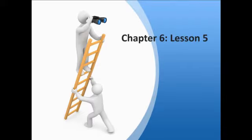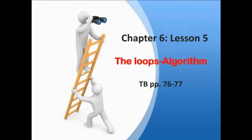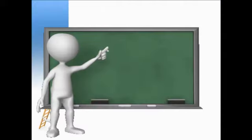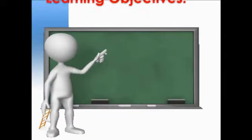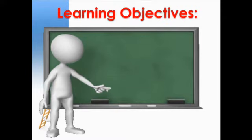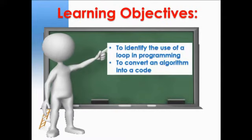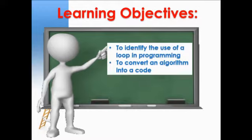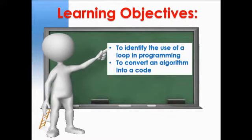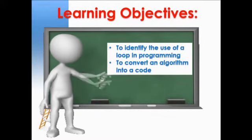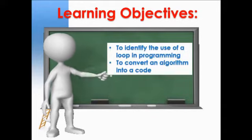We are now in Chapter 6, Lesson 5 and it's about the Loop's Algorithm. By the way, this lesson can be found in your textbook page 76-77. And here are the objectives of our today's lesson. The objectives are first to identify the use of a loop in programming and the second one is to convert an algorithm into a code.